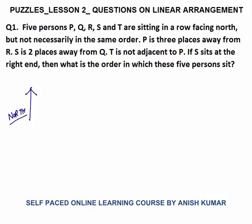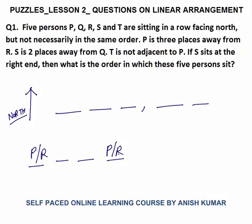P is sitting three places away from R. Let me make these five places. Now P is three places away from R — one place away, two places away, three places away. This is the symbolic notation for 'P is three places away from R.' The benefit of this symbolic notation is you don't have to read the statement again and again.